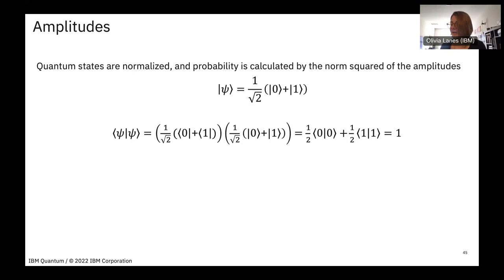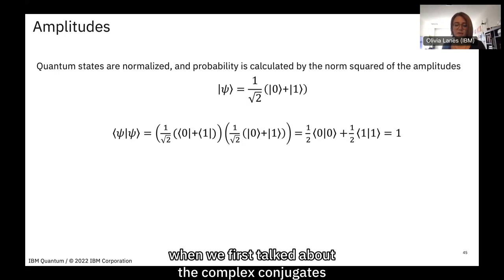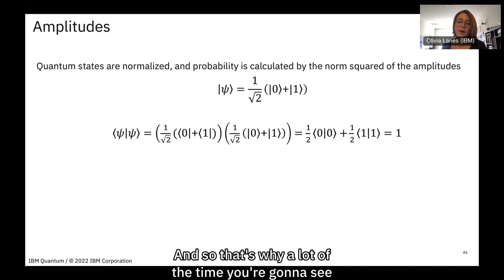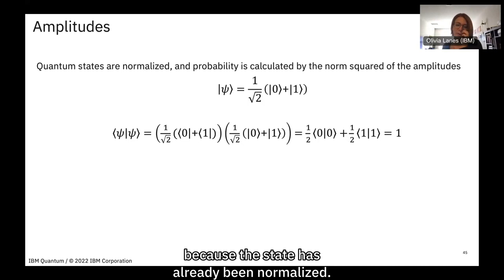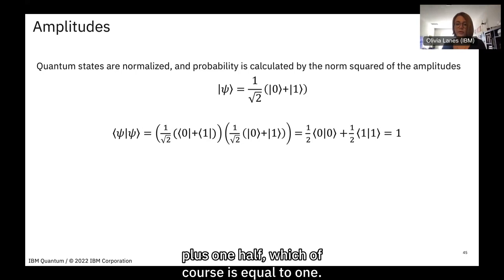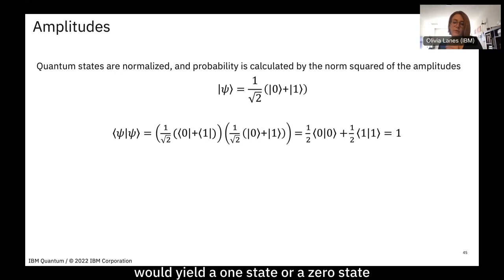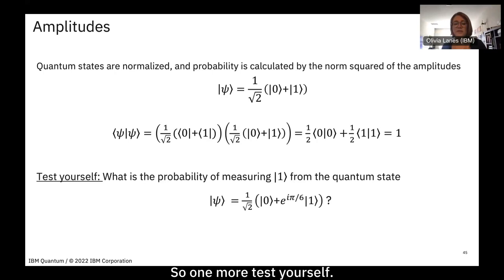Now let's talk about amplitudes. Quantum states are normalized and the probability is calculated by the norm squared of the amplitudes. This has to equal one, which is why you often see the factor of 1/√2 in superposition states. Taking the norm squared of the |+⟩ state with itself gives one half plus one half equals one — a fully normalized state — so measuring gives a zero or one state each with probability one half.